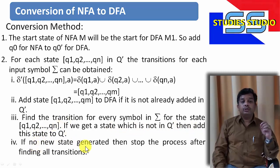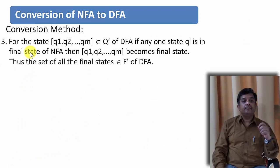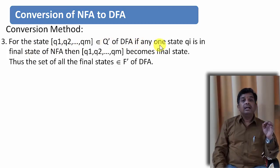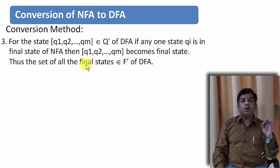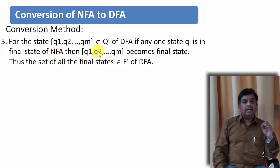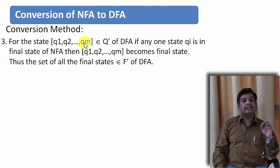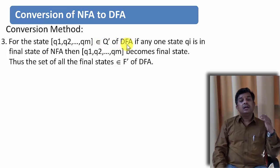The fourth step is: if no new state is generated, then stop after finding all transitions. This is the last step: for the state {Q1, Q2, ..., Qn} in Q-DES of DFA, if one state Qy is in the final state of the NFA, then {Q1, Q2, ..., Qn} becomes a final state. The set of all such final states belongs to F-DES of the DFA. It means if a final state of the NFA appears within a bracketed set in the DFA, that bracketed set will also be a final state.